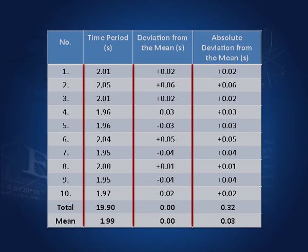But the sum of the absolute deviations, which are all positive, is not 0. In this case that sum is 0.32. And if I take the average of all these deviations, it is 0.03. This 0.03 is called the absolute error in the mean 1.99.